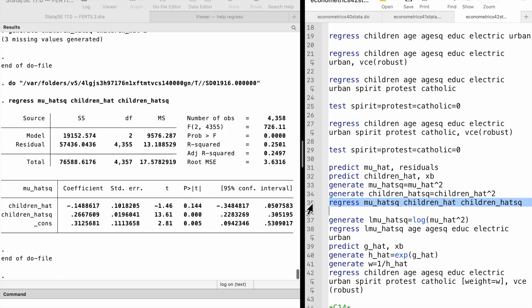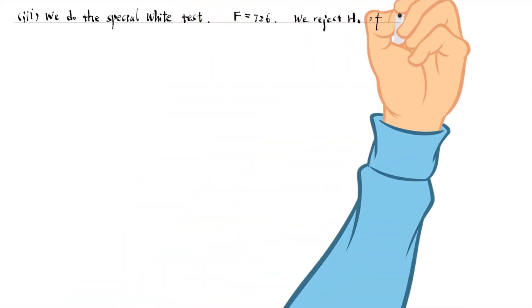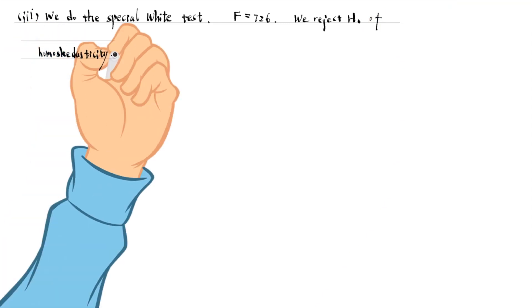Then we regress the squared residuals on the fitted values and the squared fitted values. The F-statistic for the overall significance is 726. It is large enough to reject the null hypothesis of homoscedasticity.